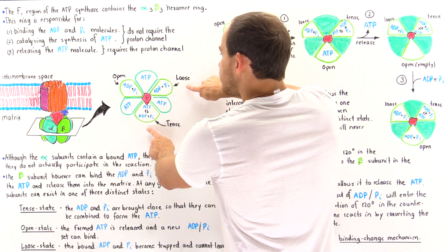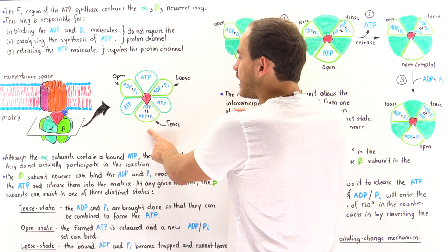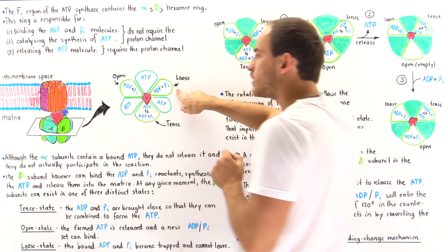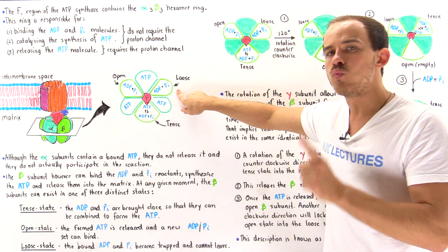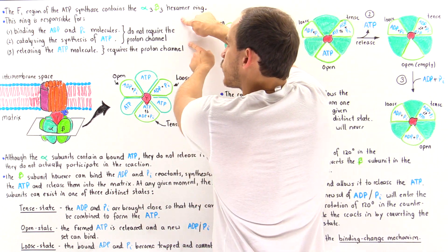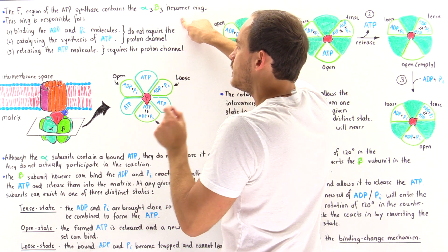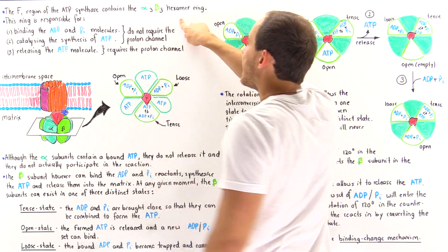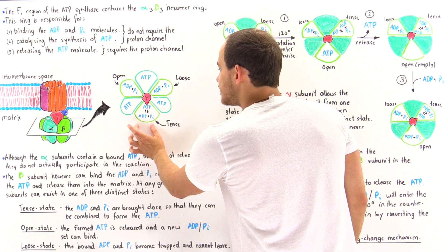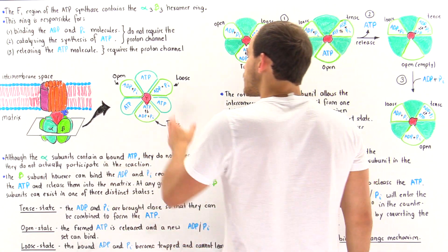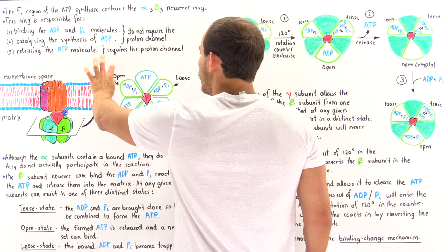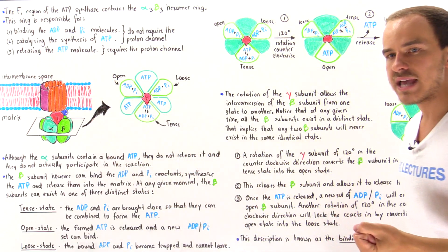The beta subunits can exist in one of three different conformational states, corresponding to the three reactions carried out by the alpha-3 beta-3 hexamer: the Tense state (T state), the Loose state (L state), and the Open state (O state).